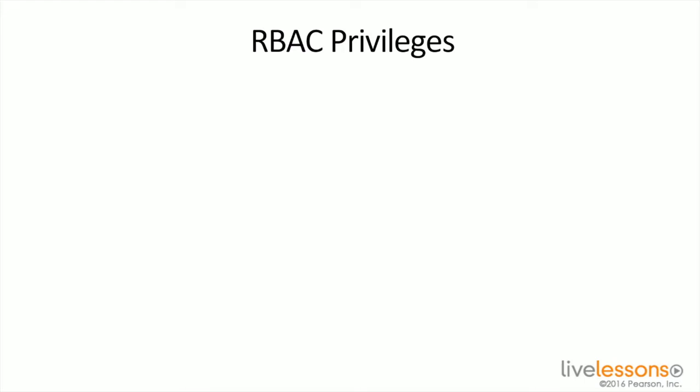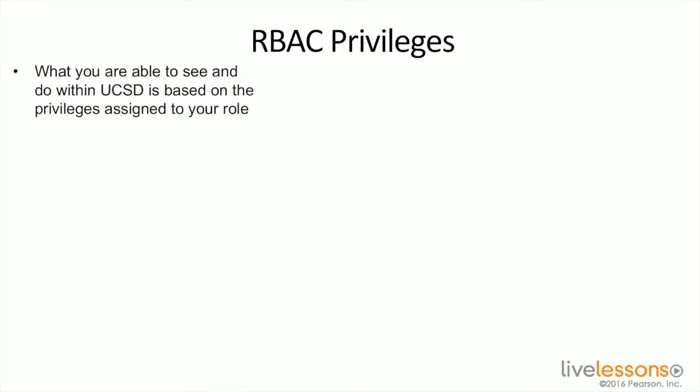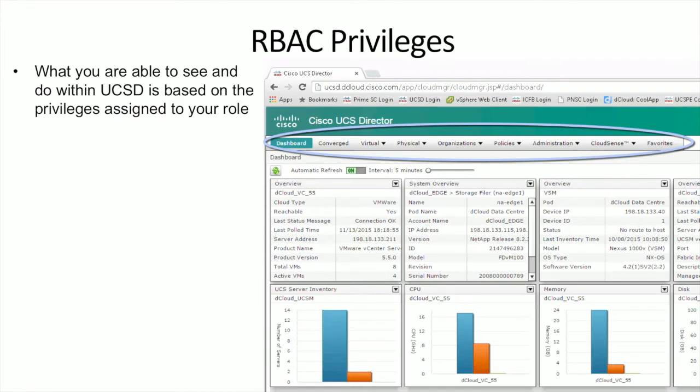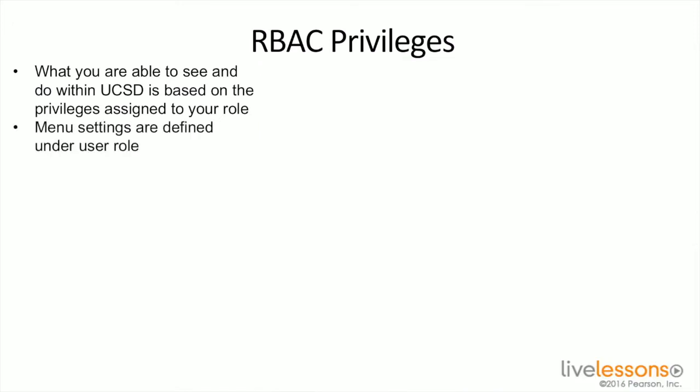RBAC privileges — there are a ton of different things you can do within UCS Director, but ultimately what you're able to see and do is all based on the privileges assigned to your role. All the different things on the menu bar are dependent upon what is assigned to you in your role. If you're not an administrator, you would not even see the admin menu. All those different menu settings are attributed to your user role.